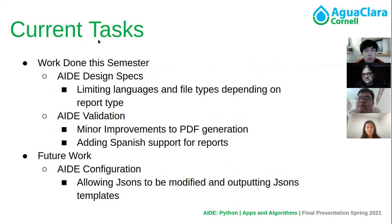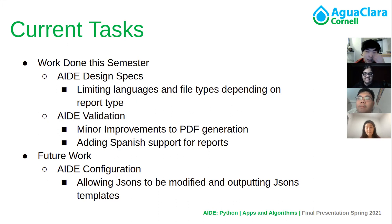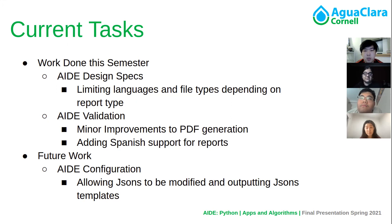The next major task we worked on was Aid Validation, which involves making sure that the reports generated and the OnShape CAD models that we generate are a valid representation and do adhere to the same calculations based on AgaClora's in-house made software. This semester we made minor improvements to the PDF generation, including adding graphs and showing during PDF generation how certain aspects look. We are also adding Spanish support for reports, which we will upload in a future git push.